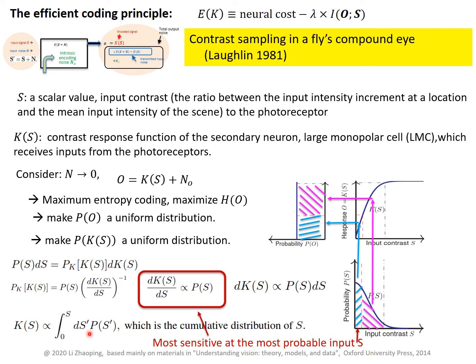This means that the sensitivity — the slope of your contrast response function — should scale with your probability distribution. Therefore, for the more probable input contrast, you should have a more sensitive, more stretchy part of your contrast response function. That makes sense.